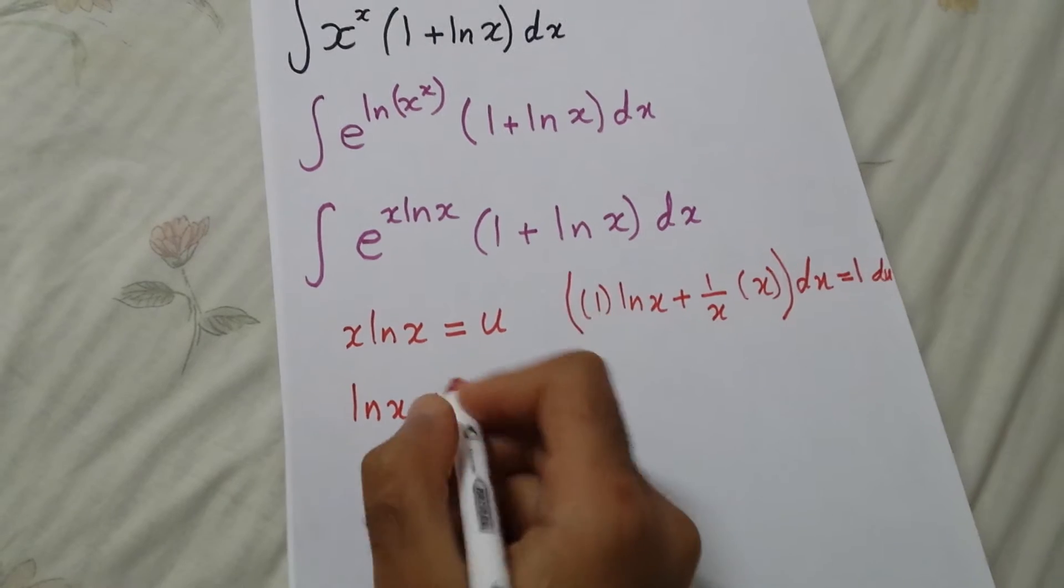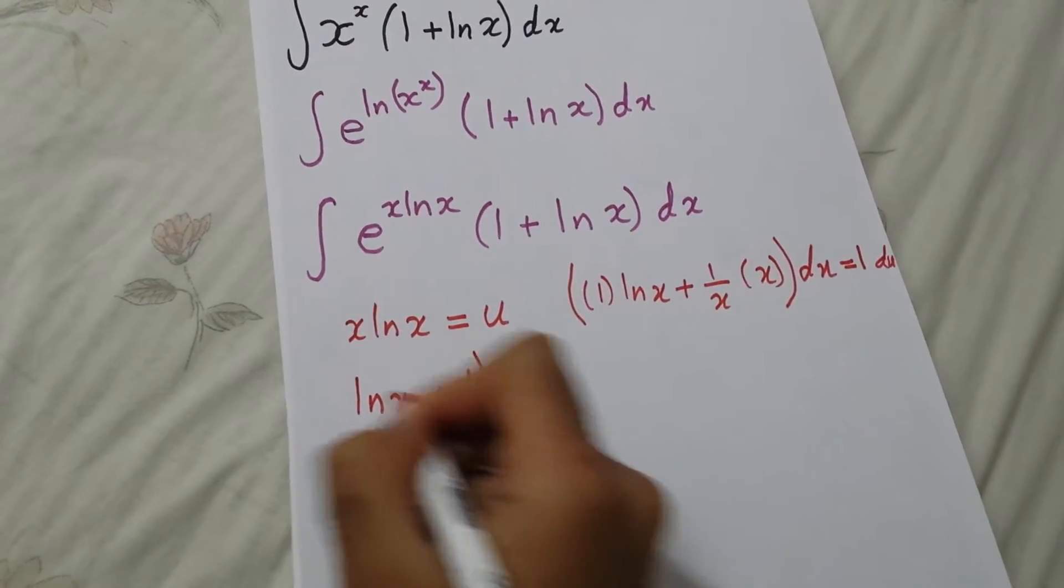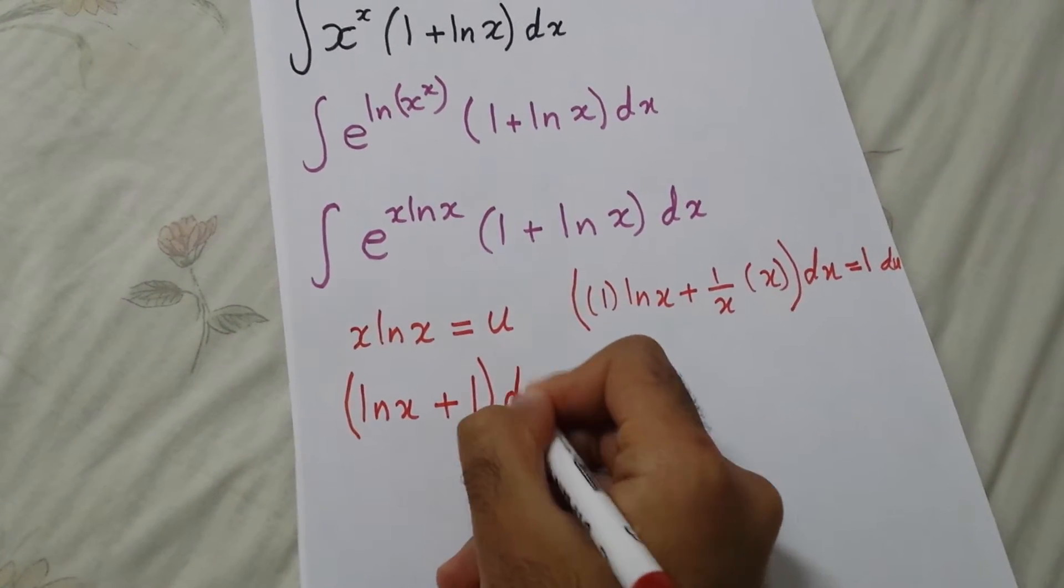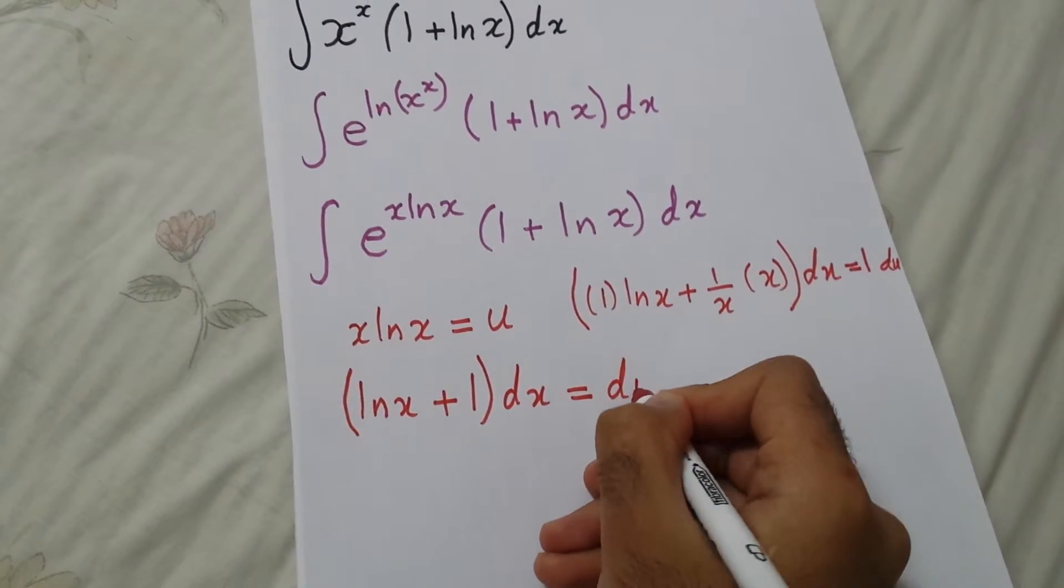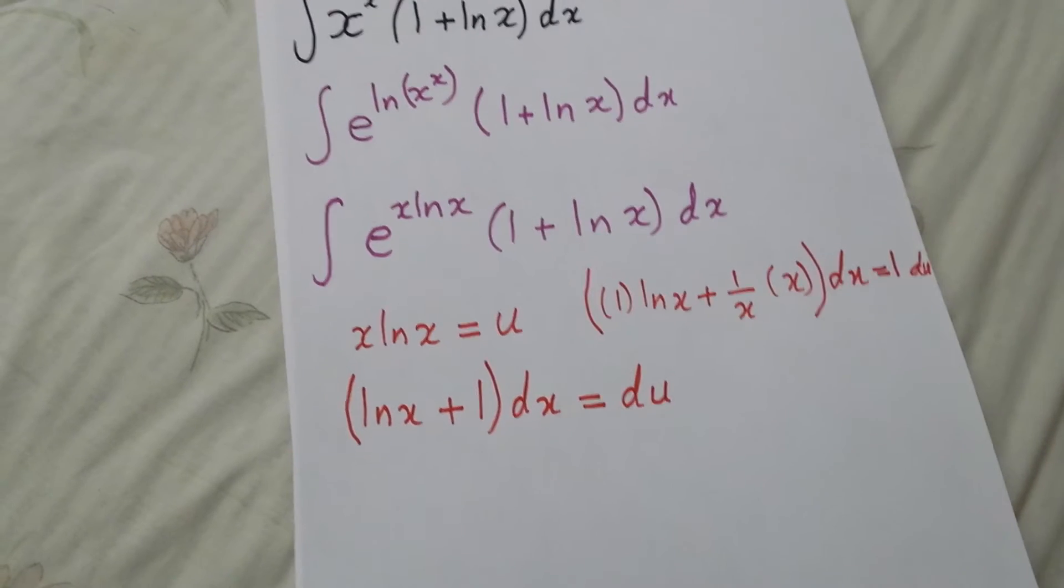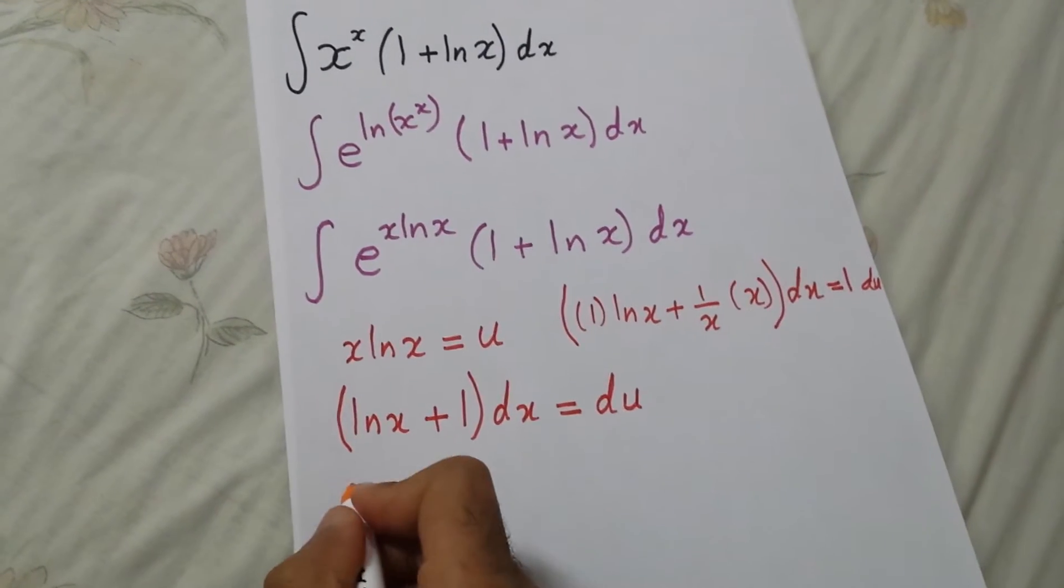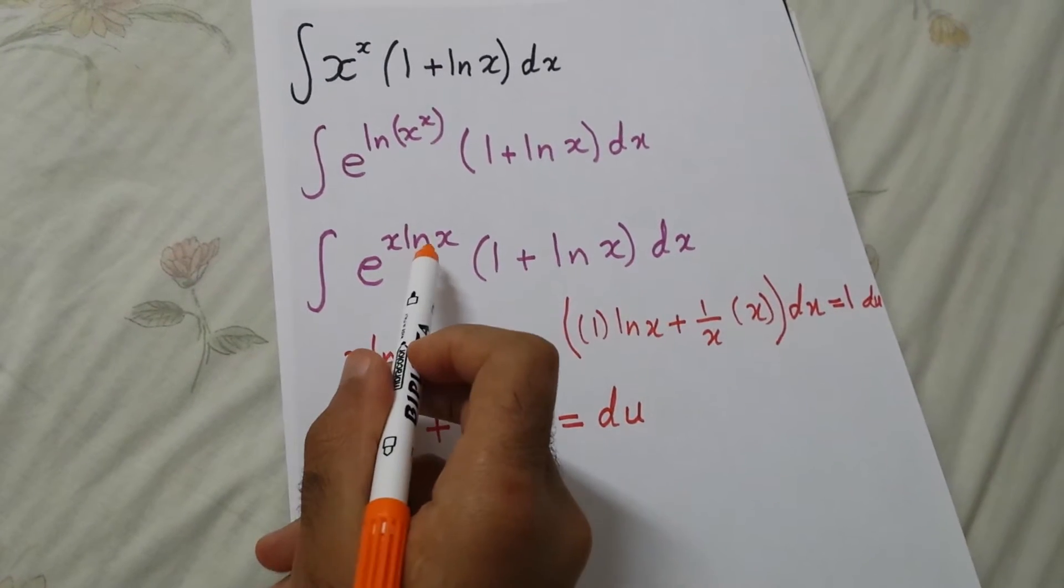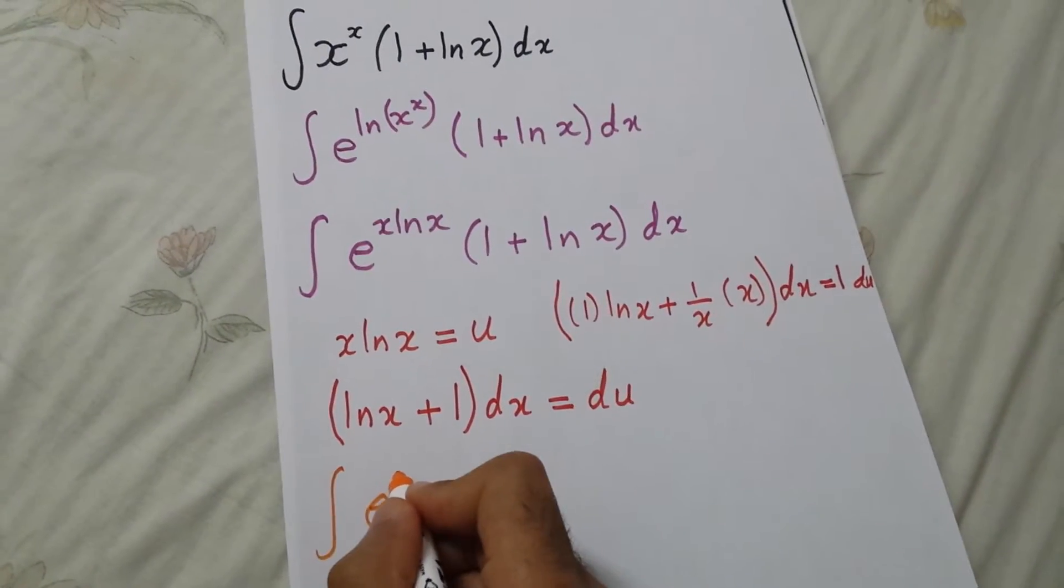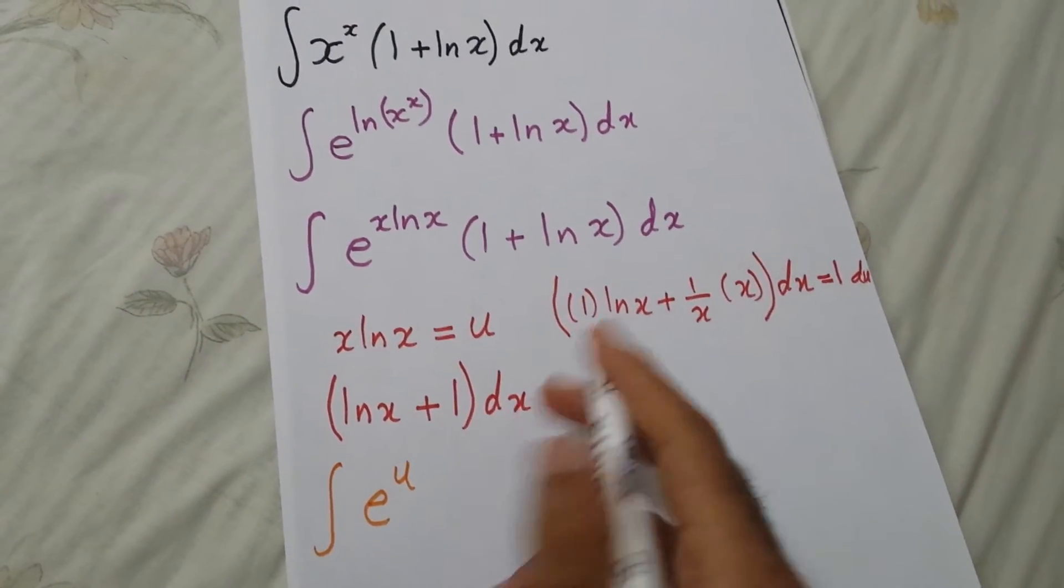So the integral will be e to the u times 1 plus ln x times dx, which is du.